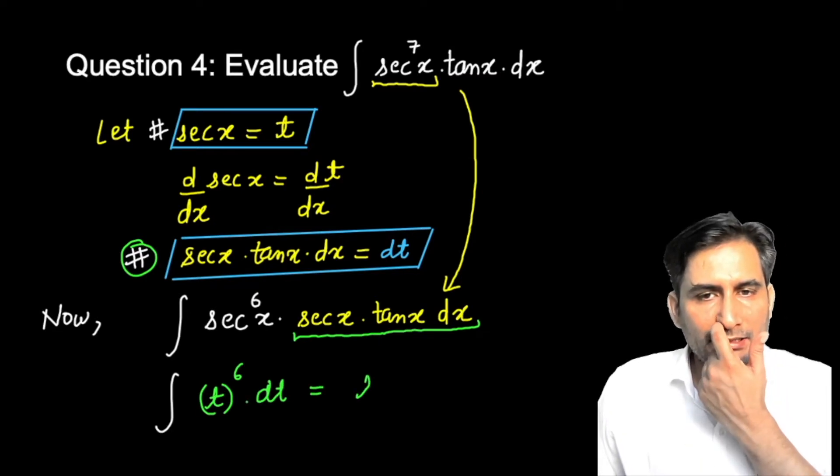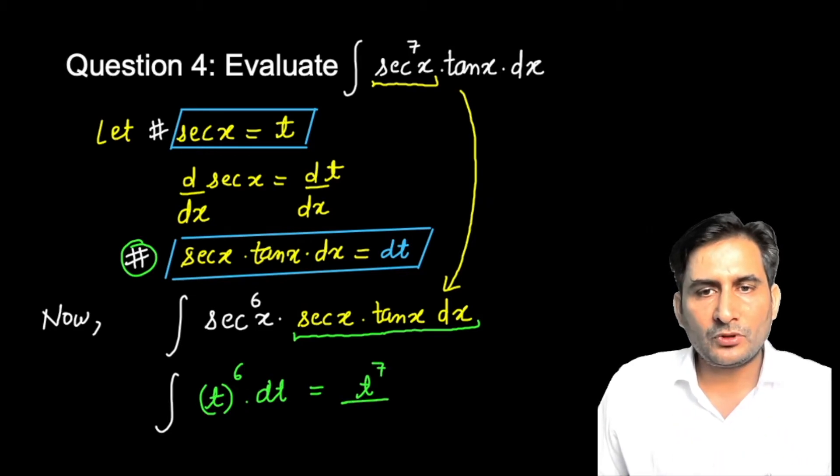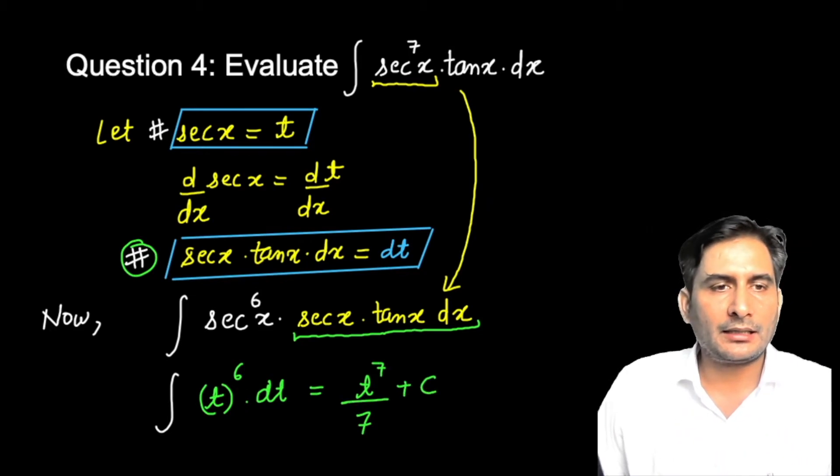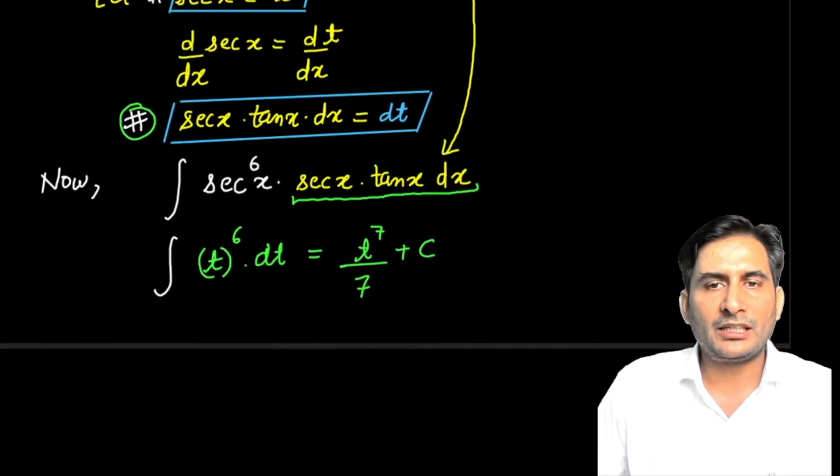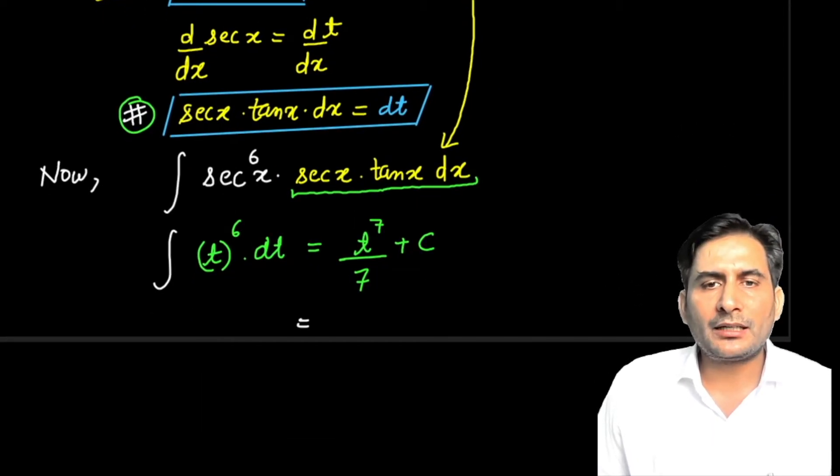Integration of t^6: t^7 divided by 7 plus C. Don't forget to add C - if you don't want to lose half a mark. Indeed, half a mark will be deducted.